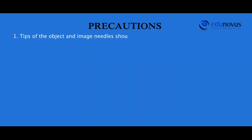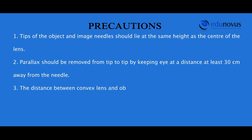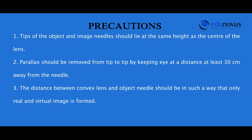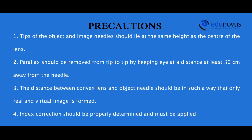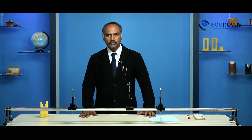Precautions: Tips of the object and image needles should lie at the same height as the center of the lens. Parallax should be removed tip-to-tip by keeping the eye at least 30 centimeters away from the needle. The distance between the convex lens and object needle should be such that only a real image is formed. Index correction should be properly determined and applied for both U and V. You are now able to determine the focal length of a convex lens on your own. Thanks for watching this experiment.